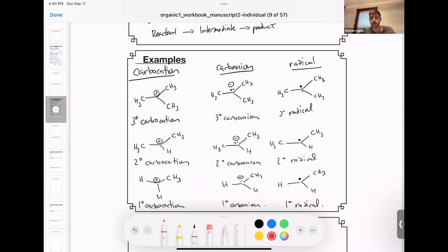Let's talk about how their energies change as a function of their orders. Tertiary carbocations are relatively stable, still reactive intermediates, while primary carbocations are extremely unstable, and secondary is in between.